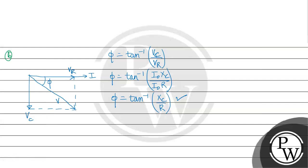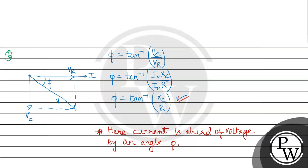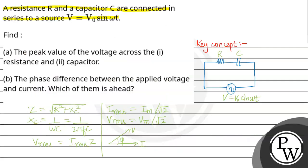And which of them is ahead? Current is ahead of voltage by an angle φ. This is the way. These are the answers. The final answer for part A is VR₀ equals V₀R divided by square root of R² plus Xc², and VC₀ equals V₀Xc divided by square root of R² plus Xc². For part B, phase difference is tan inverse Xc by R, and current is ahead of voltage by angle φ. Hope you understand it well, all the best.